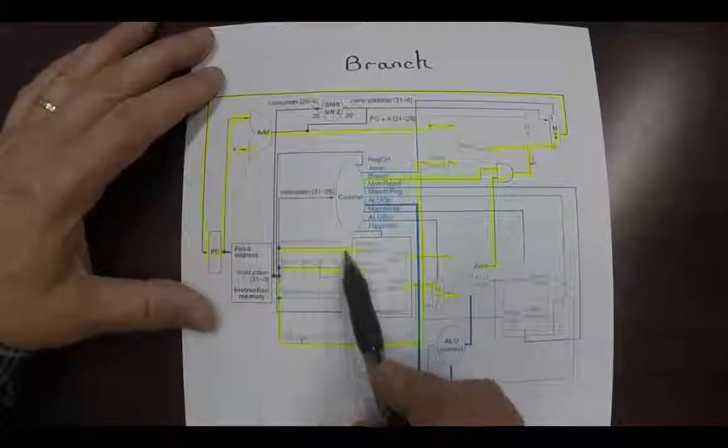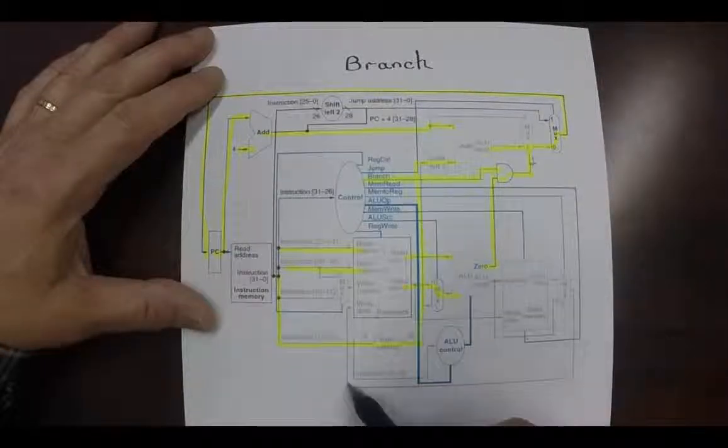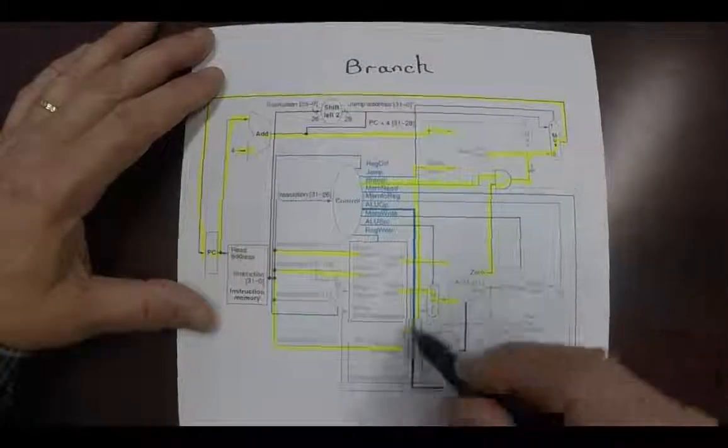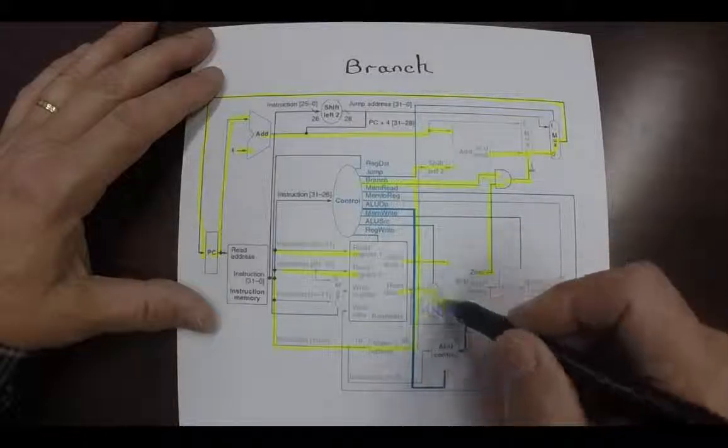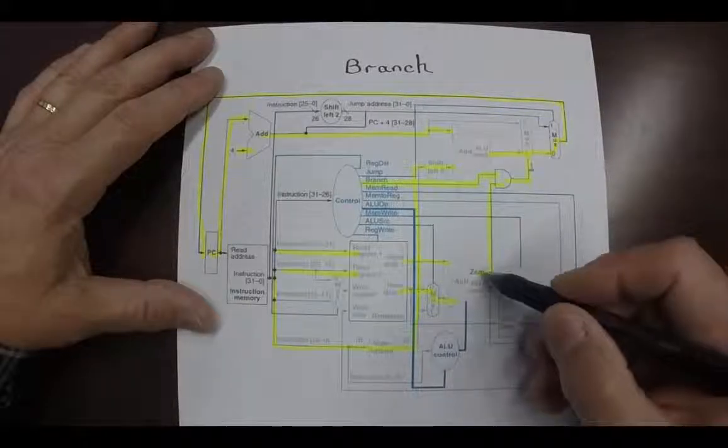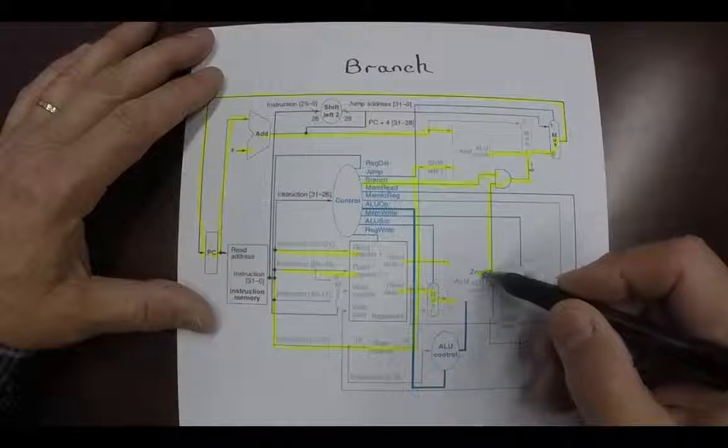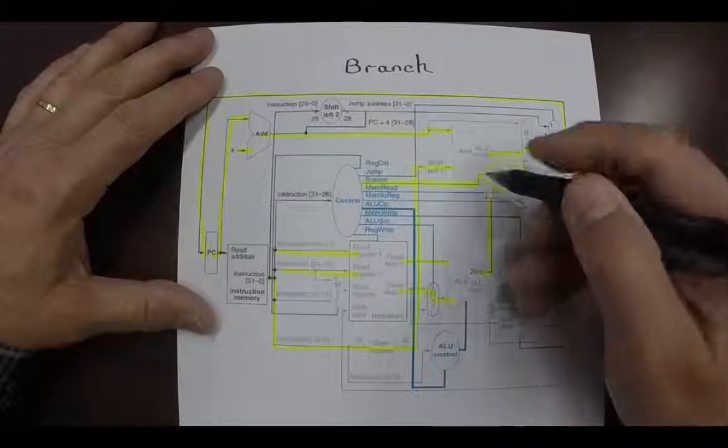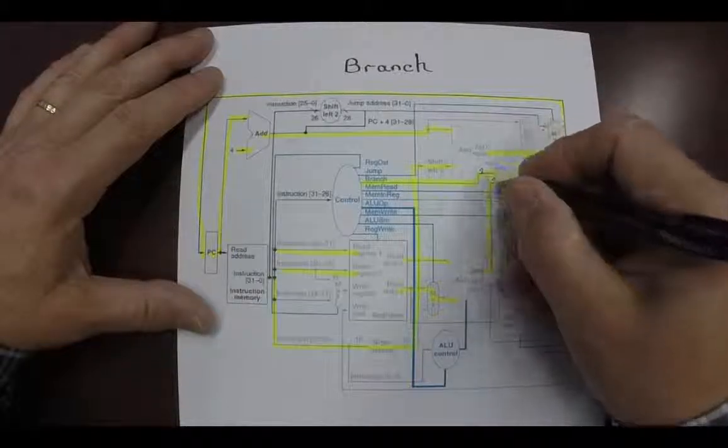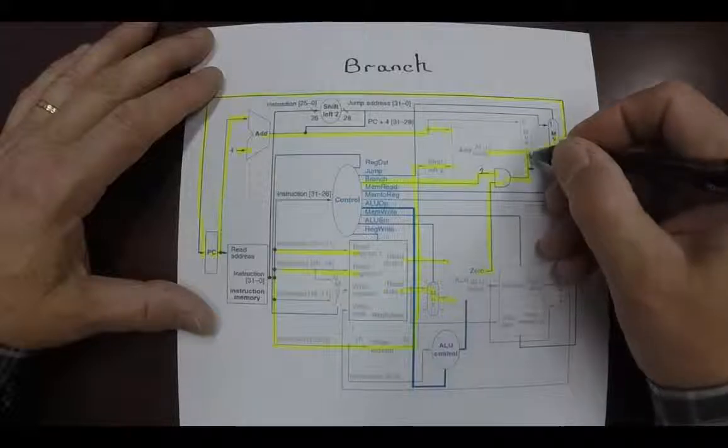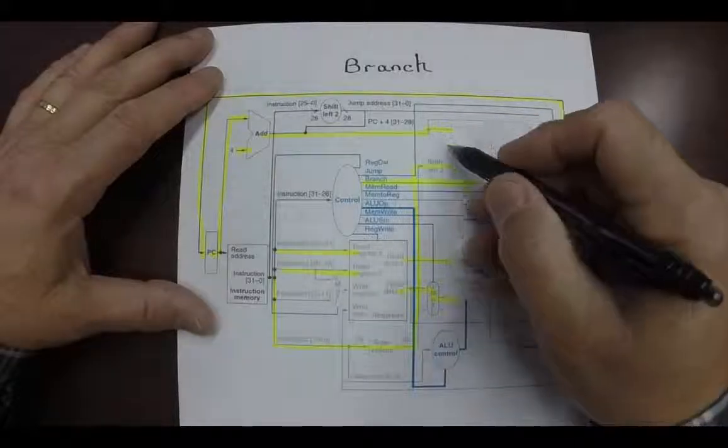So here we have two registers coming in. Let's say we're branch on equal. Those are going to be sent to the arithmetic logic unit. Subtraction is going to be done and if they're both equal, a 0 will come out of here and this branch will be turned on to 1, and if both are turned on then this will be turned to 1 and it will take that branch.